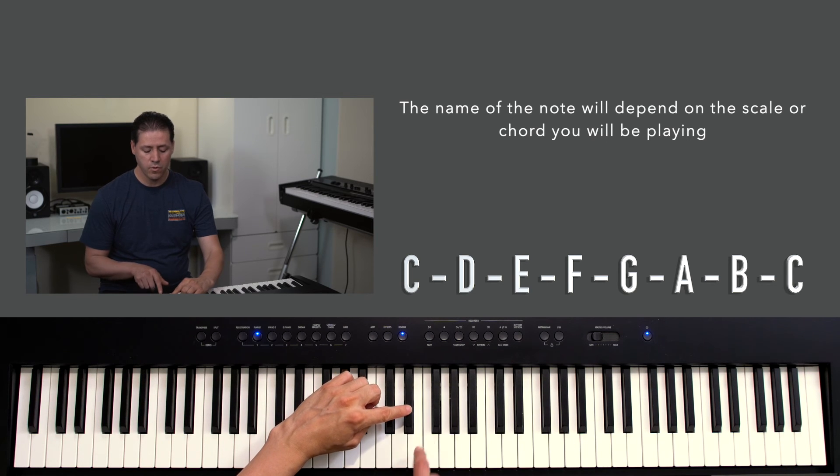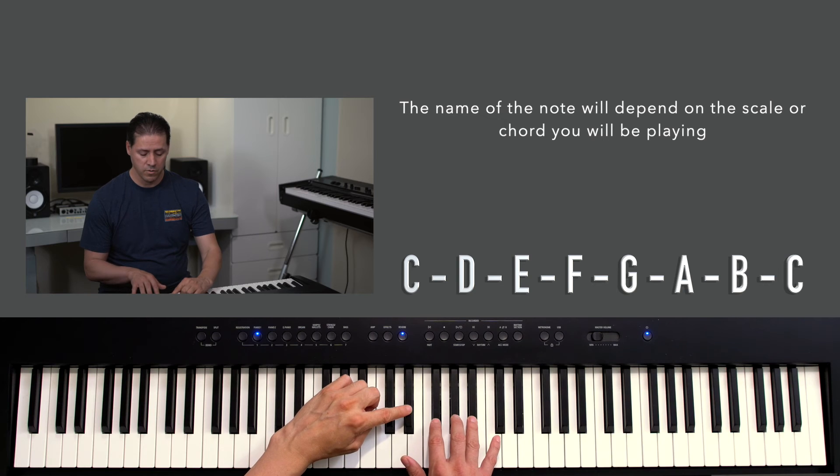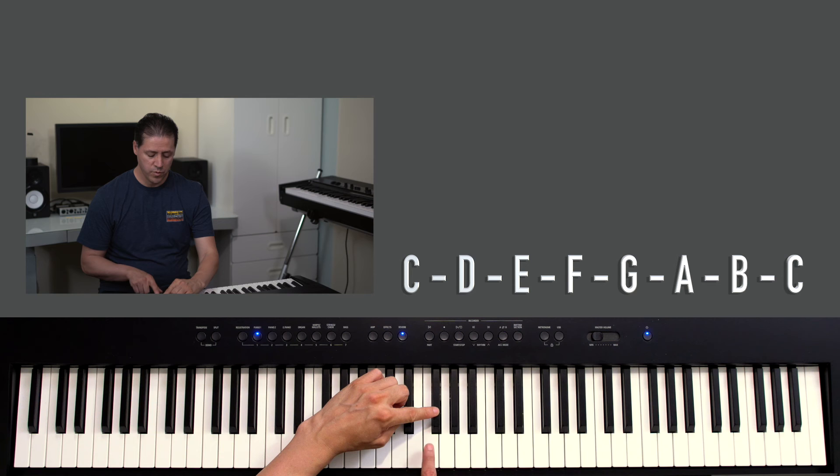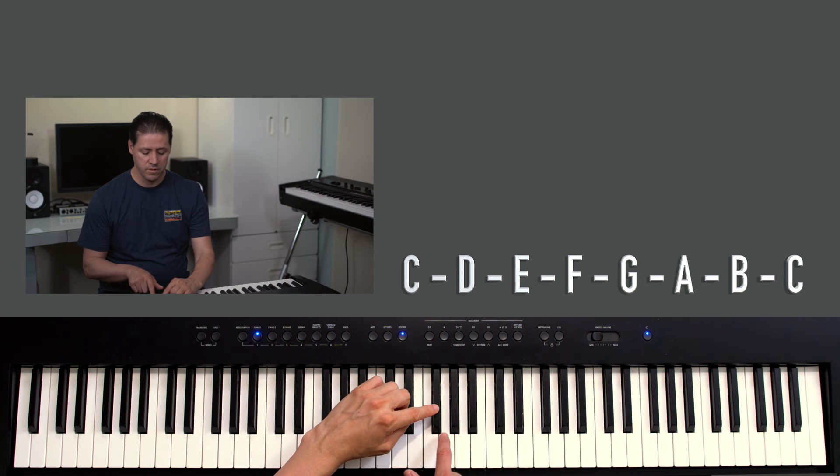So if we go to the group of three black notes, same thing applies in the same sequence. We already know that this is F, so it's going to be called F sharp, or this is G, it will be called G flat. And then the second black key is G sharp or A flat.